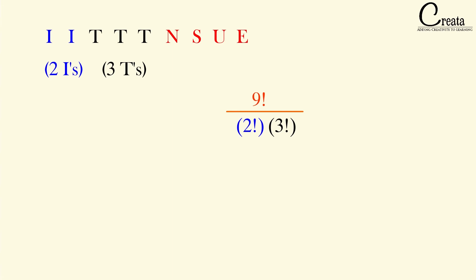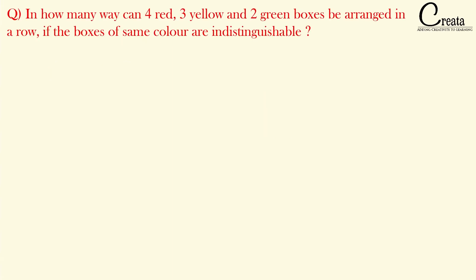Based on this, let's take some questions for further clarity of the concept. The question is: in how many ways can 4 red, 3 yellow, and 2 green boxes be arranged in a row if the boxes of the same color are indistinguishable?